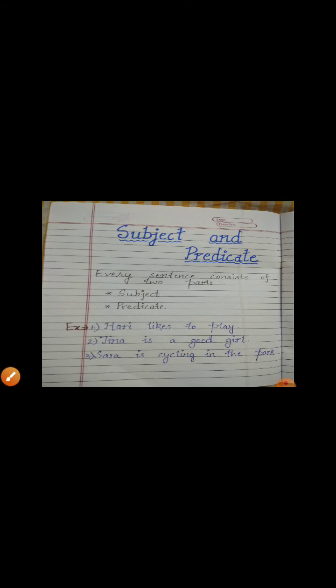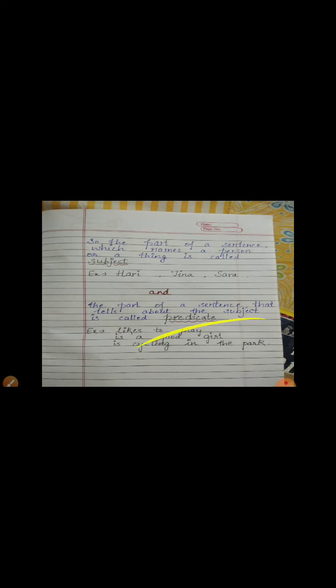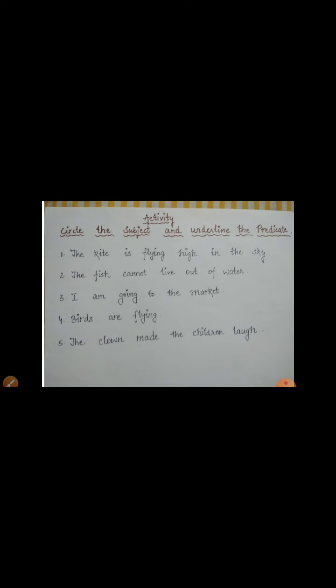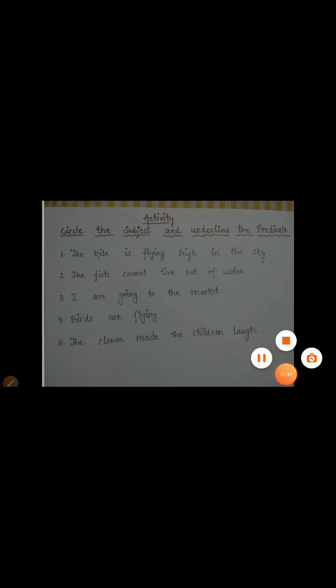I hope you all have understood subject and predicate. The subject is the noun or pronoun which names a person or a thing, and the predicate tells us what action is done by the subject. Now let us learn it more with this activity. Here is: circle the subject and underline the predicate. I have given you five sentences — you have to circle the subject and underline the predicate.